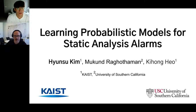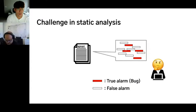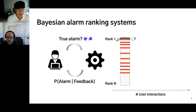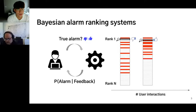Hi, this is Hinsu Kim from KAIST. In this talk I'm going to present about learning probabilistic models for static analysis alarms. This is joint work with Mukherjee Nguyen from University of Southern California and my advisor Kiyong Ha. In static analysis, one of the big challenges is false alarms. Since the alarm report provides a bunch of false and true alarms with no order of significance, a developer has to look into each alarm without any guidance. So the alarm ranking system was introduced to improve usability and effectiveness of static analysis.